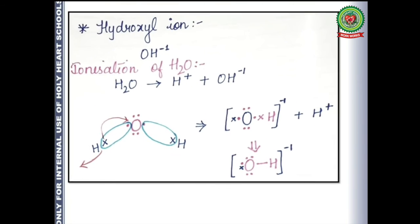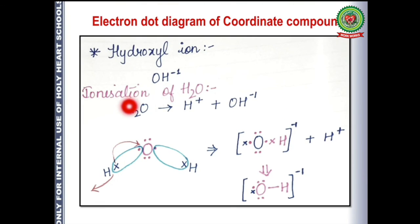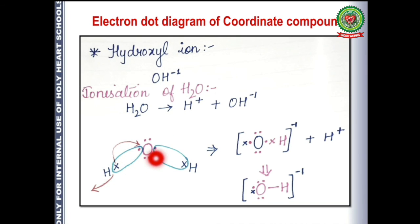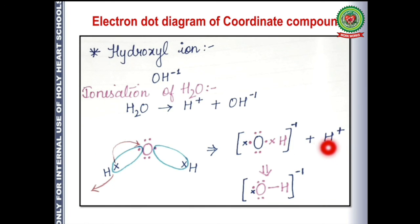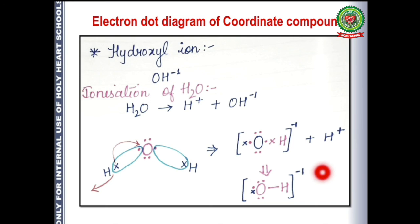The third example is of the hydroxyl ion. When water ionizes, it breaks down into H⁺ and OH⁻. A base will abstract the proton. Due to the electronegativity difference between oxygen and hydrogen, the electron of hydrogen is donated to oxygen — the electron stays and hydrogen leaves as H⁺. Due to the presence of this extra electron, the overall OH species gets a negative charge, forming the hydroxyl ion.